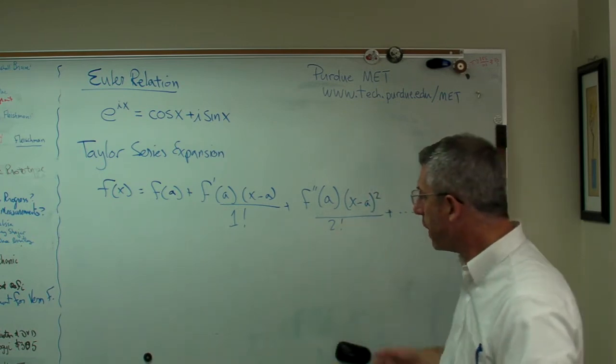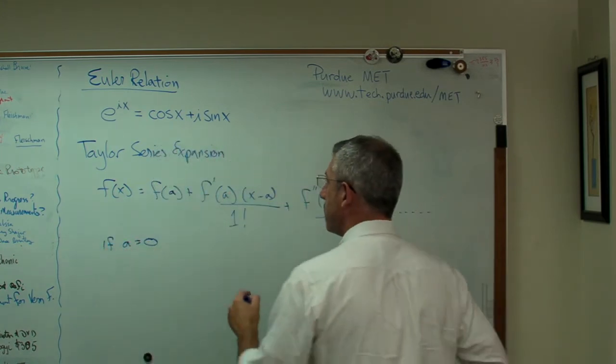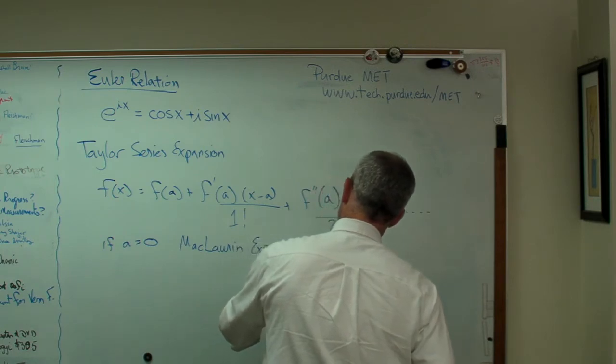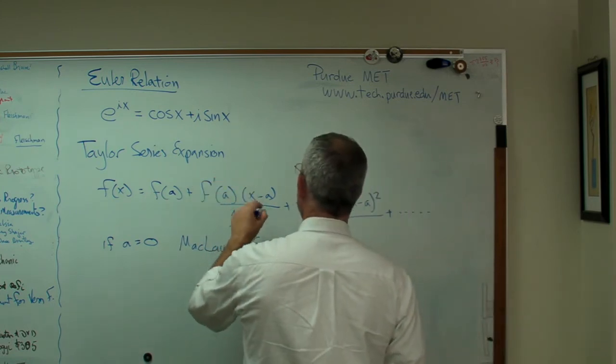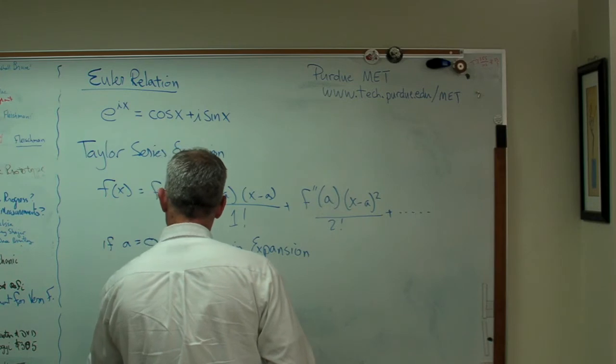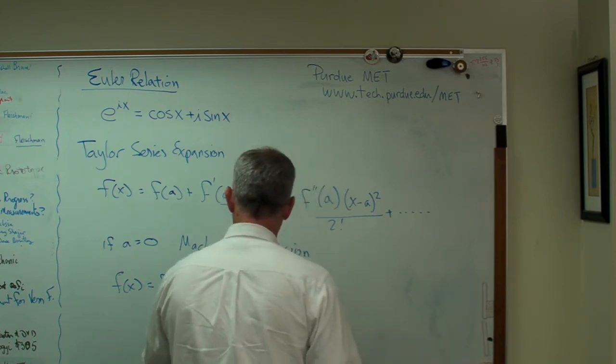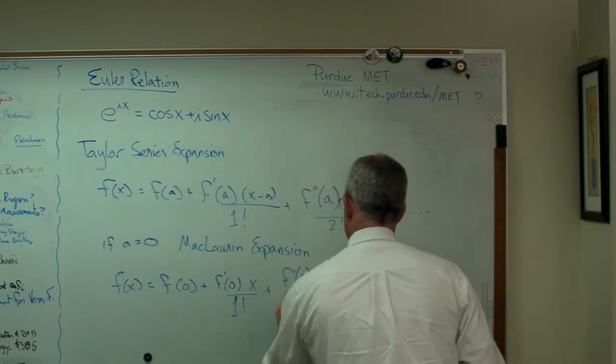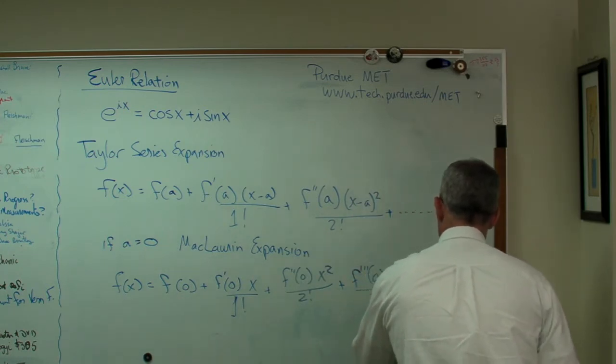Now, if A is 0, then you have something called a McLaurin series expansion. It's just a subset, and it's called a McLaurin expansion. It's a subset of the Taylor series expansion. All McLaurin expansions are Taylor series expansions. And so if A goes to 0, this looks a little differently now. So I'll write out f of x equals f of 0 plus f prime of 0 times x, f double prime of 0 times x squared over 2 factorial, and so on.